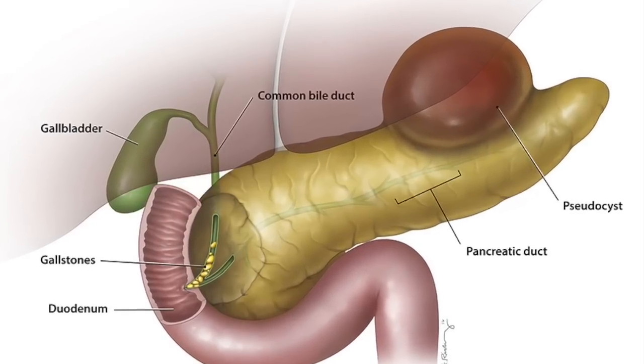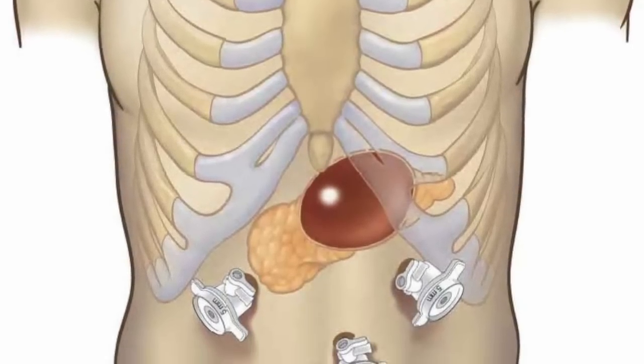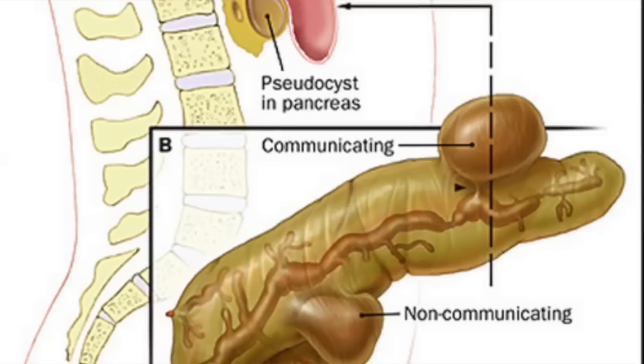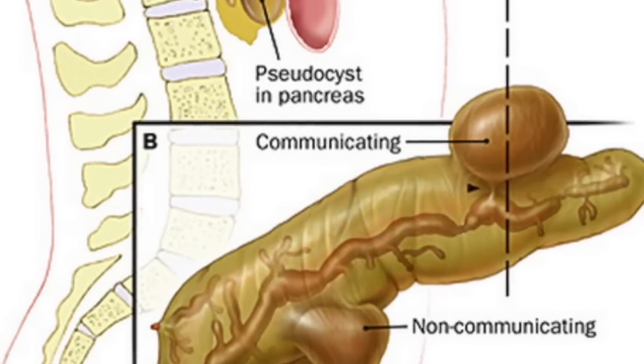Kabhi kabhi is cyst wali thaili mein enzymes ho sakte hain, blood ho sakta hai, ya keval paani ho sakta hai. Iske alawa pancreas sugar wale patients ke liye baut zaroori hai — insulin pancreas banata hai aur glucagon naami ek aur hormone banata hai. Insulin aur glucagon sugar levels manage karte hain. Insulin sugar ko khoon se cells mein daalta hai; glucagon khoon mein sugar badhaata hai.